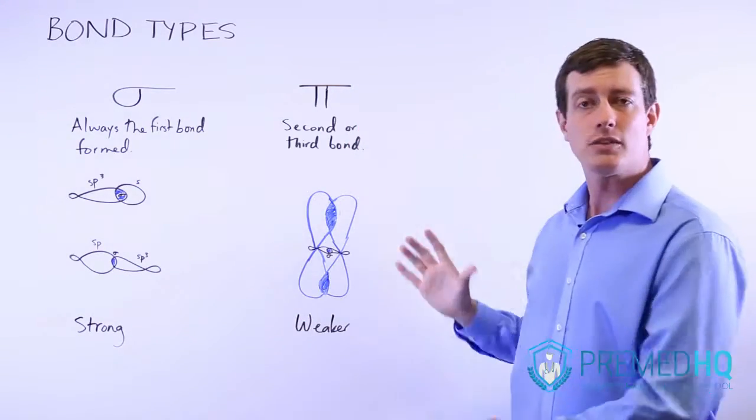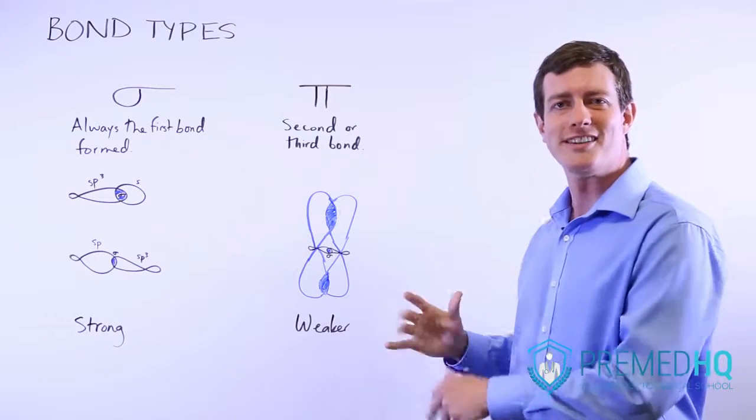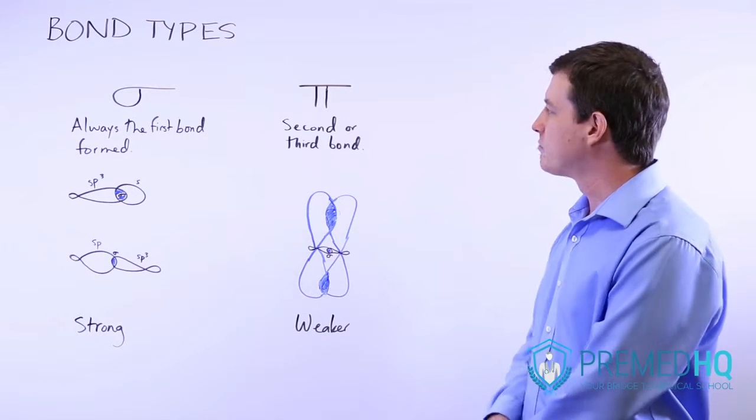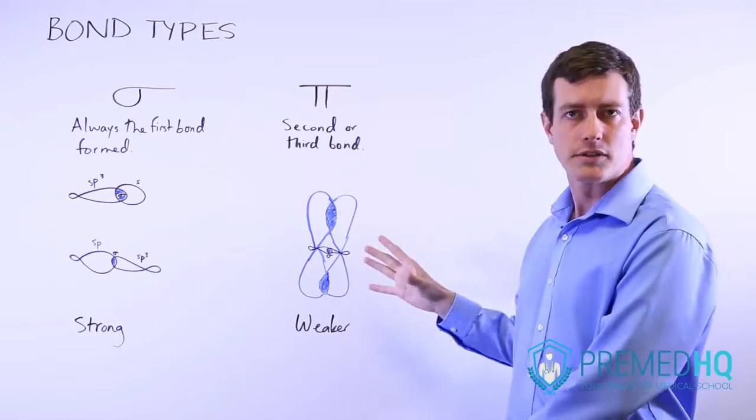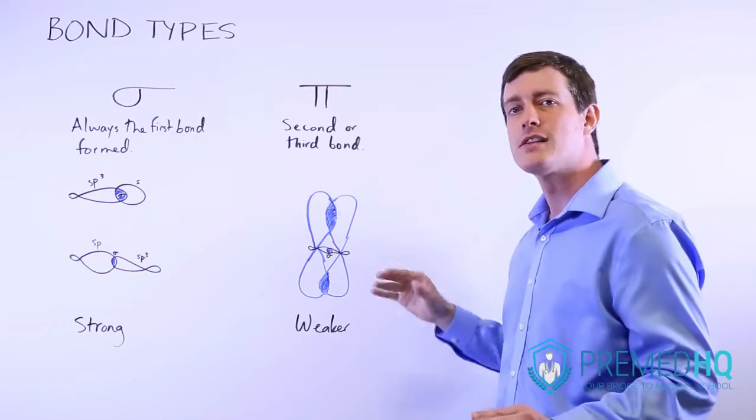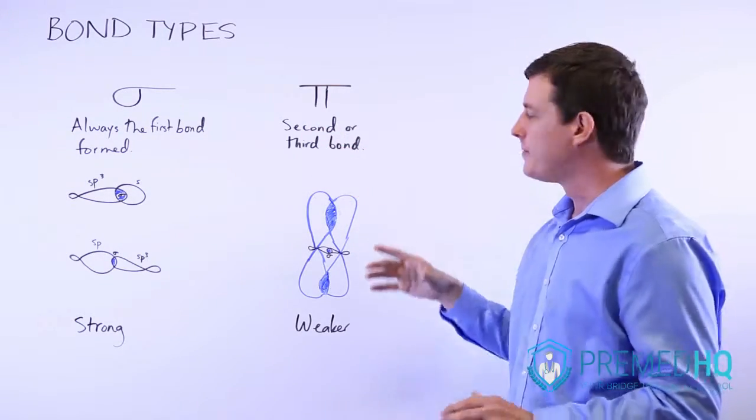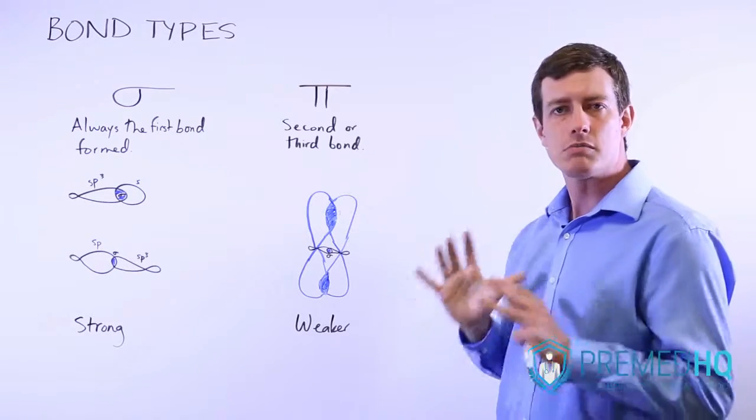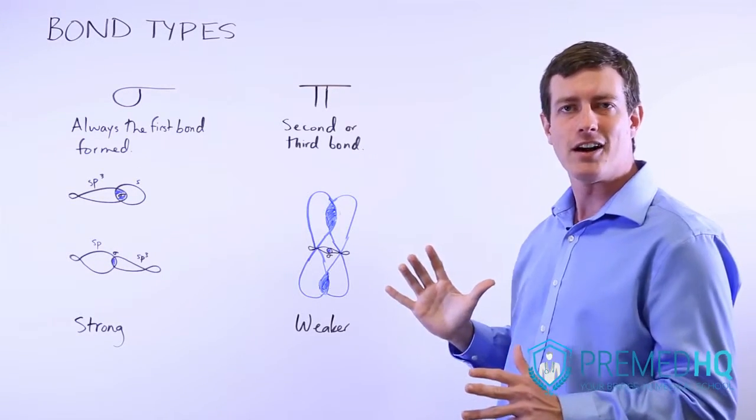The pi bond will be the second or third bond formed. It is produced only by p orbitals. If other things hybridize but you need a second or third bond, you need to keep those p orbitals intact.